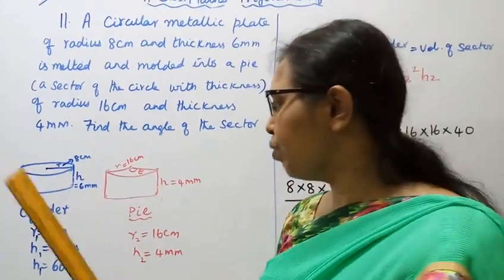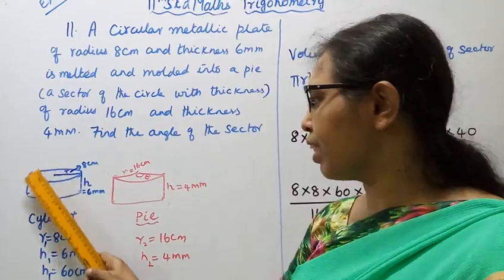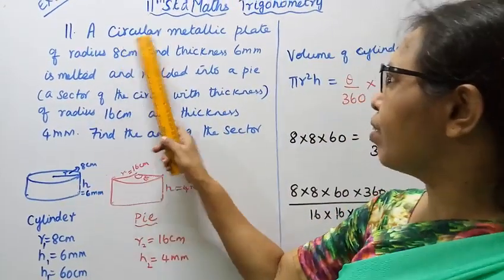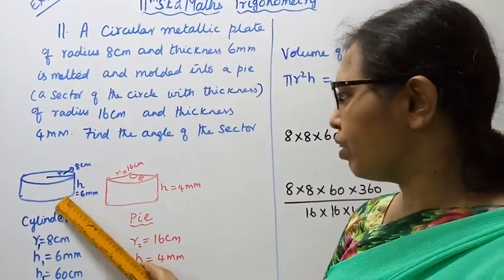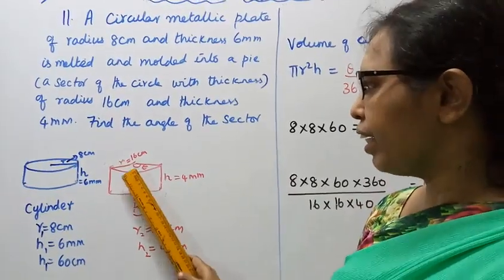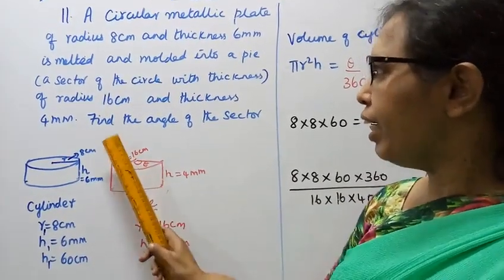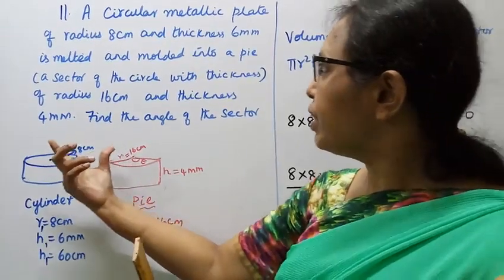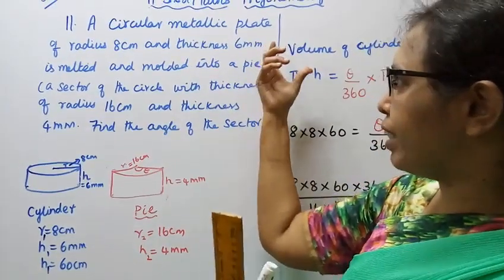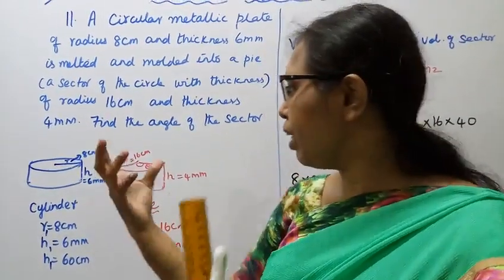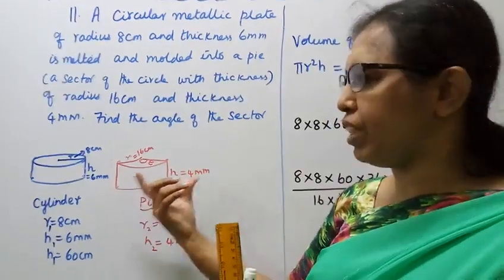Okay, this is a cylinder, a circular metallic plate. This is a cylinder. This is a pie, cake shape. Two diagrams. This is a circular metallic plate that's melted and molded into this pie shape.